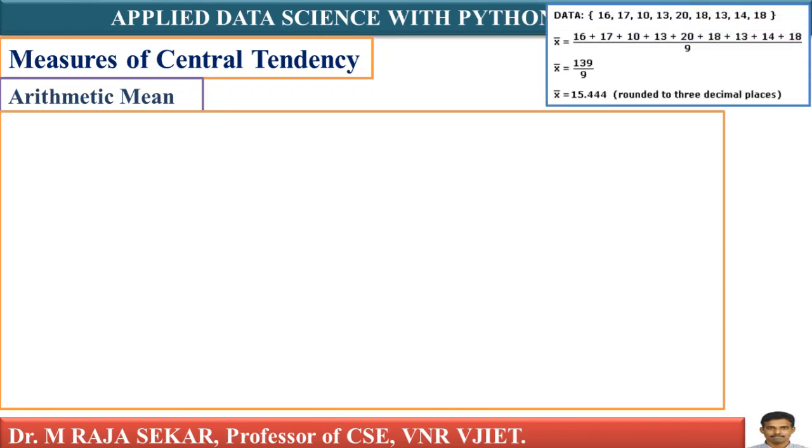For example, if I have a simple data set like 16, 17, 18. How can I find mean? Just add these numbers. If I find mean or average or arithmetic mean, that is a measure of central tendency. I can say, measures of central tendency is a single number which describes the entire data.